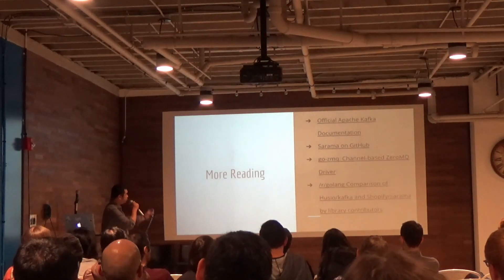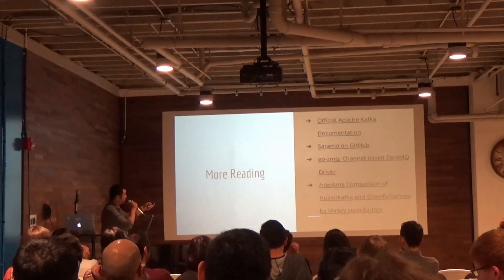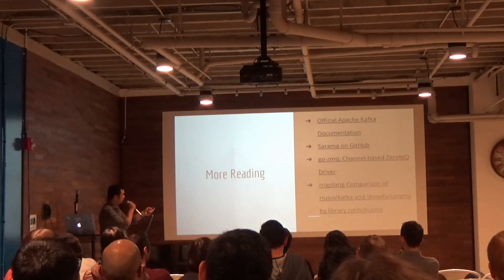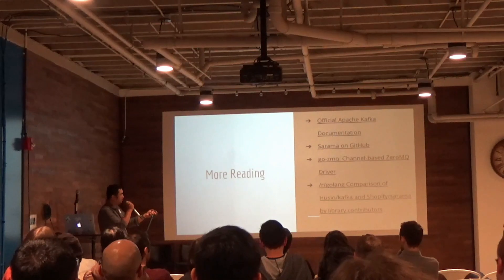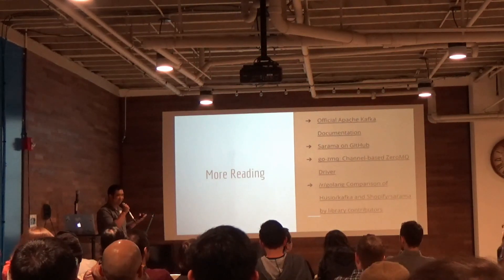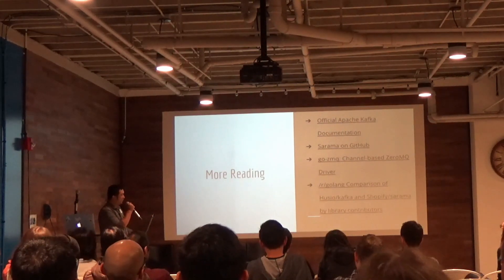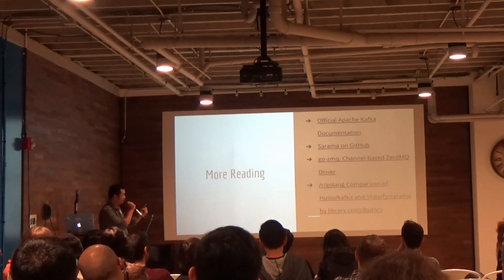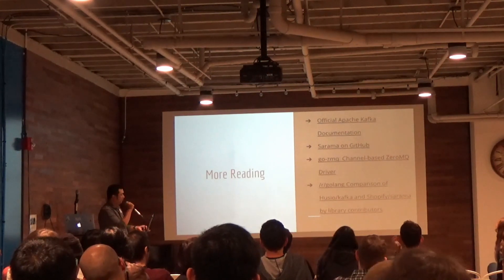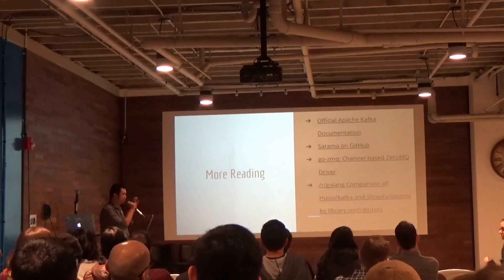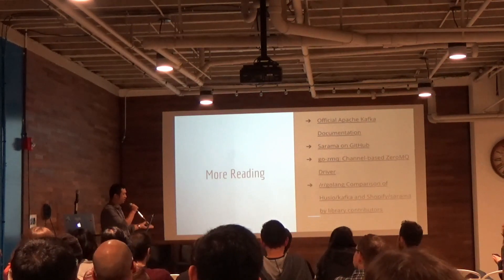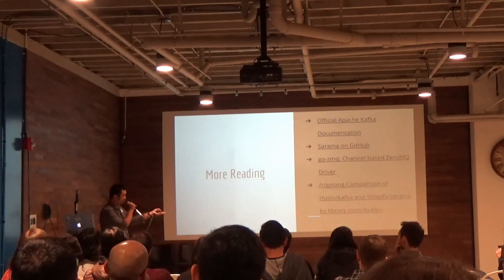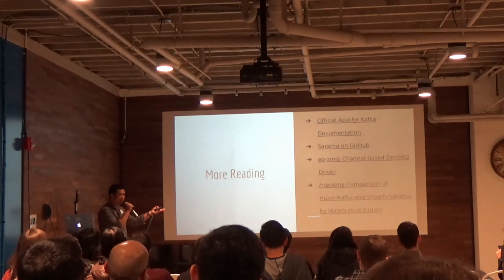As far as further reading goes, there's the official Apache Kafka documentation, there's the Sarama link on GitHub. I've also included a link to another channel-based Go driver in case this doesn't exactly fit your needs. And there's a pretty interesting discussion on the Golang subreddit where there's a discussion between someone who wrote a strictly blocking API for Kafka and one of the important contributors for Sarama.